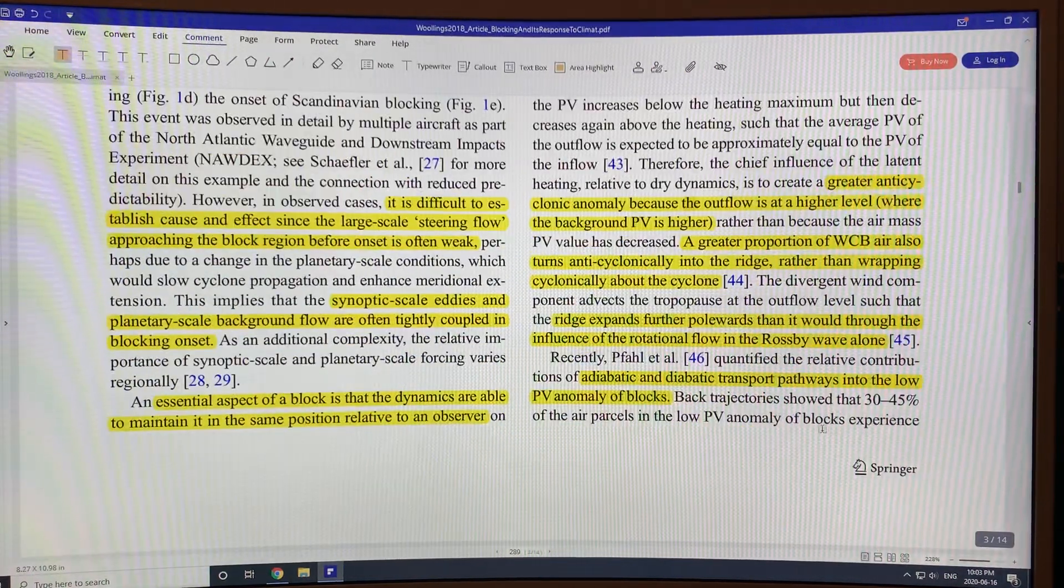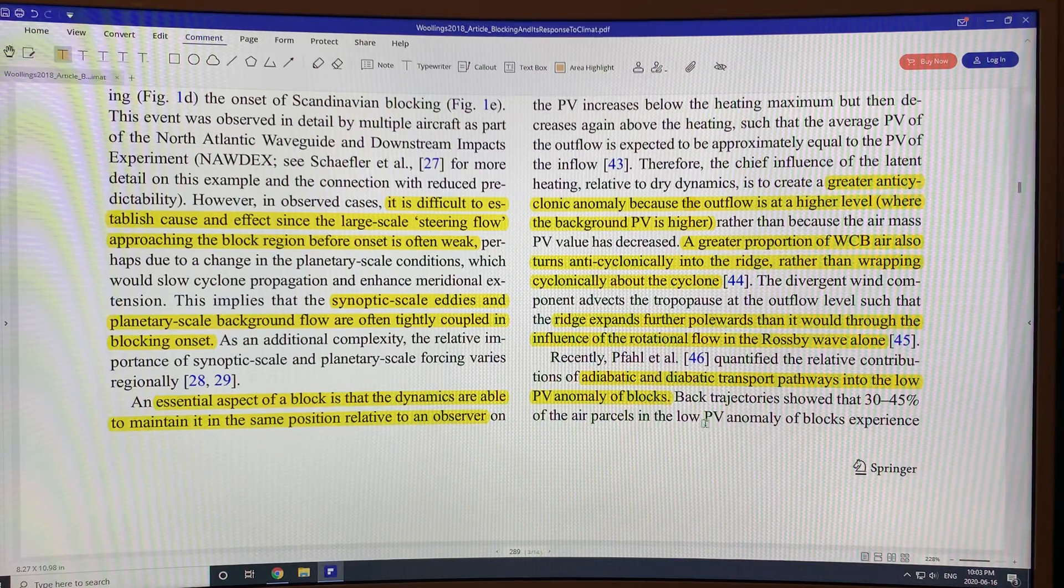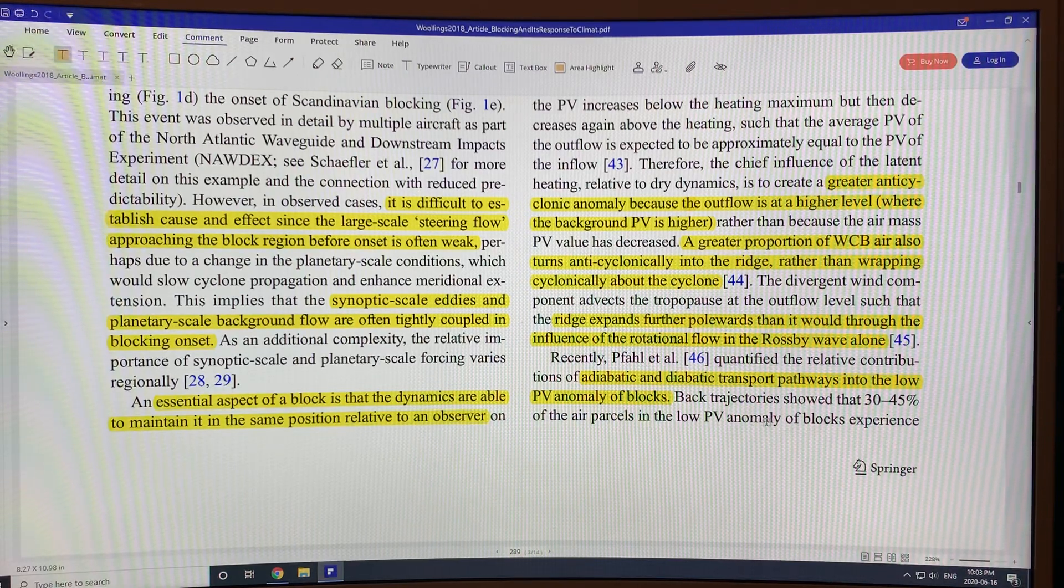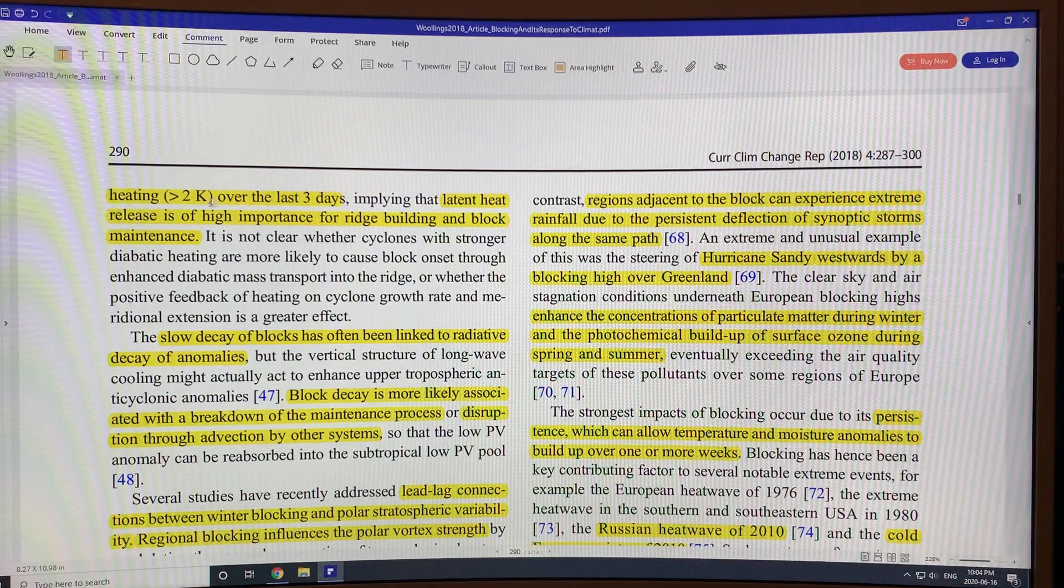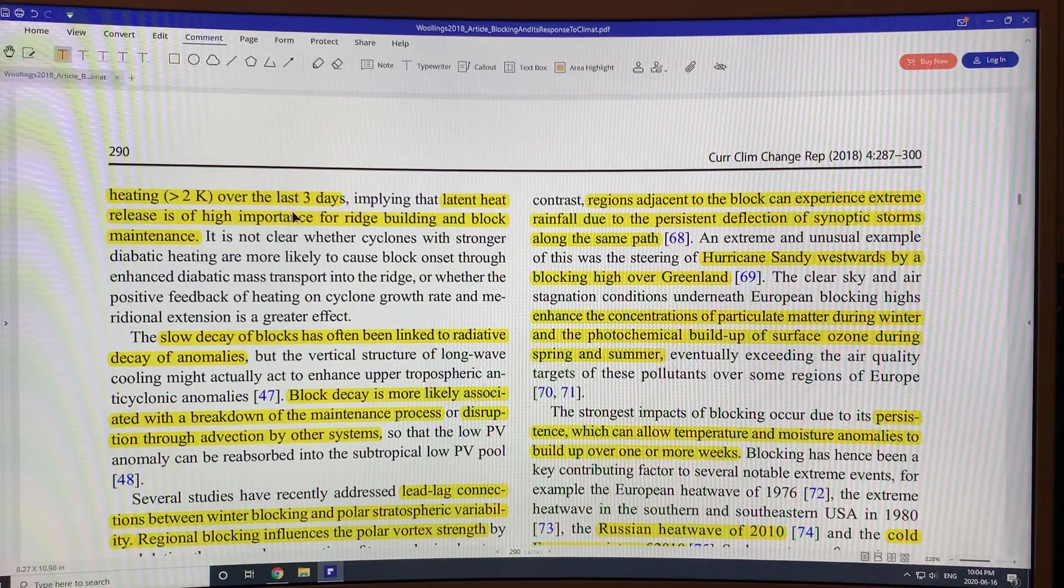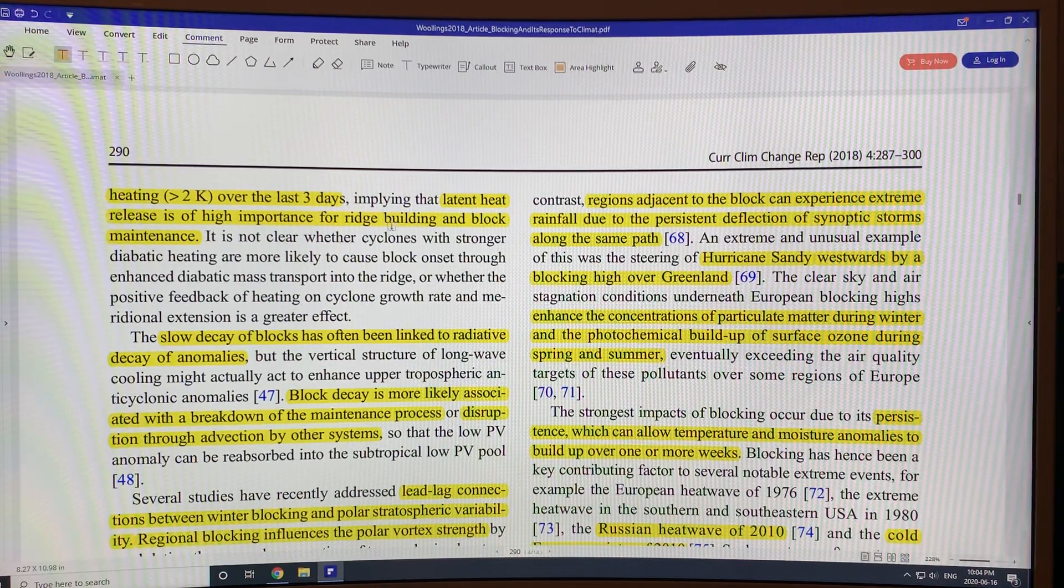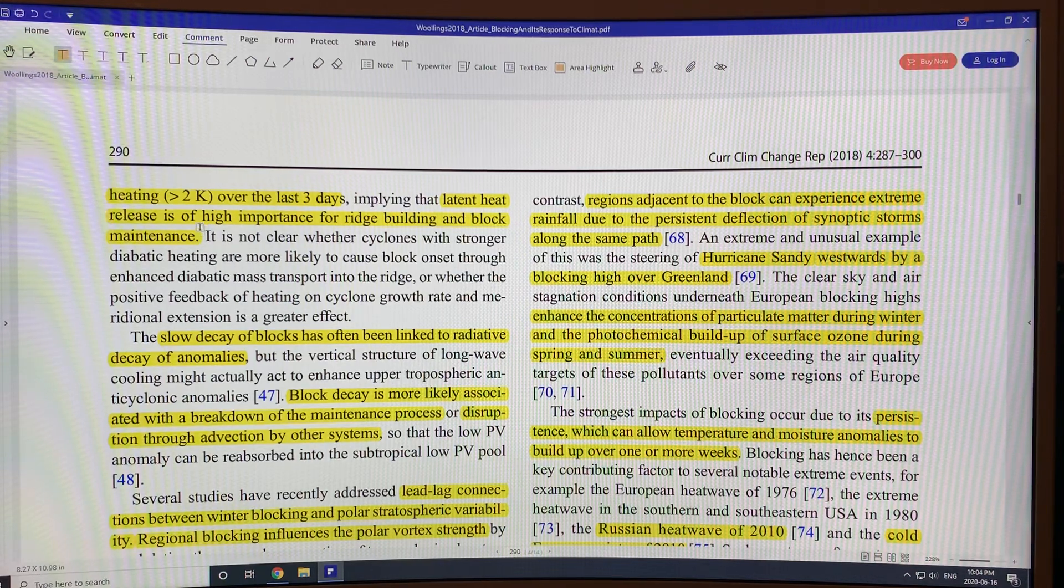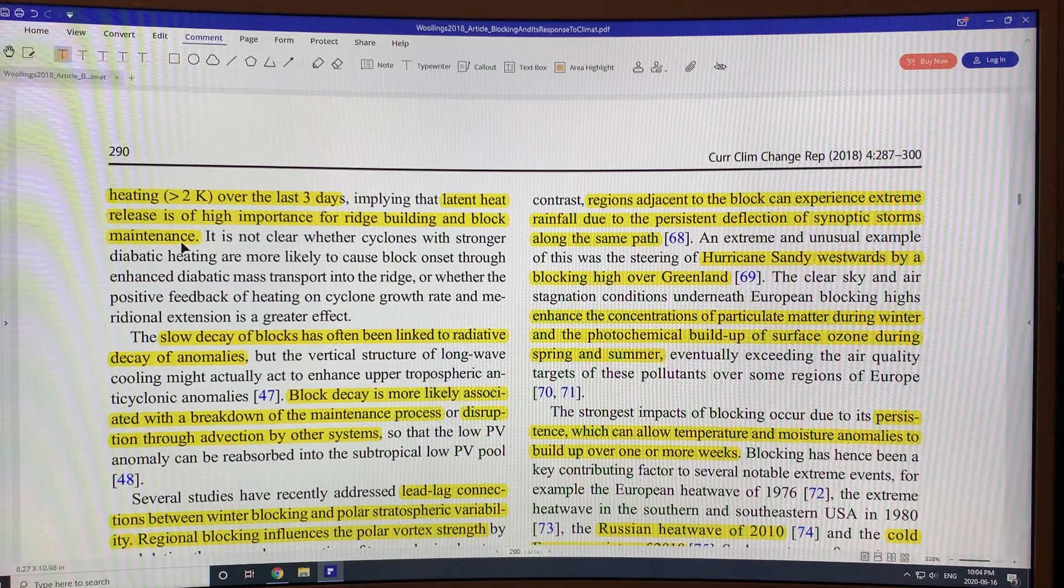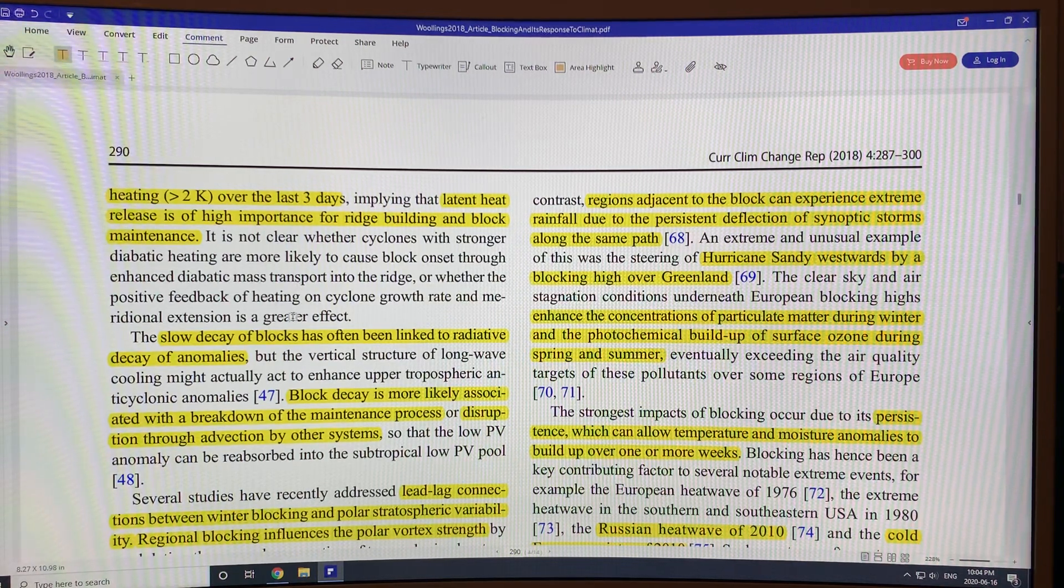About 30 to 45 percent of the air parcels in the low potential vorticity anomaly of blocks experience heating of a grade of above two degrees Kelvin over the last three days, implying that latent heat release is of high importance for ridge building and block maintenance. And then when you don't have that latent heat release anymore, that moisture, then the block can fail. So we need to learn more about the dynamics.